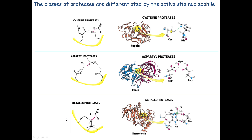The third class uses a general base — some amino acid in the enzyme — to deprotonate a water molecule. The water is stabilized by a metal ion cofactor coordinated by the enzyme. The water attacks the carbonyl, forms an oxyanion, collapses back to a carbonyl, and breaks the peptide bond — all without covalent attachment to the enzyme. Thermolysin is an example of this metalloprotease class.